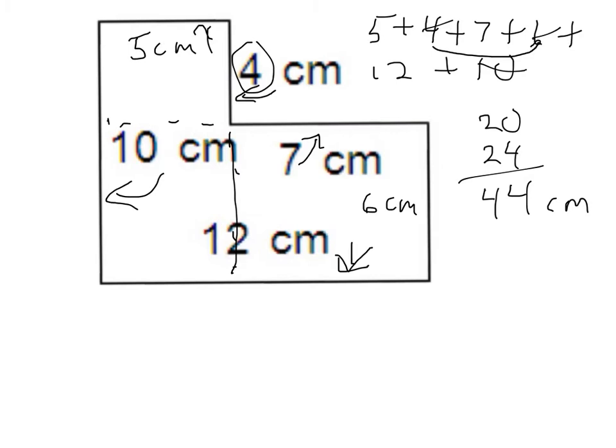Let me review what I just did. I found the length of each of the side lengths on my object — this side, this side, this side, this side, this side, and this side — and then I added them all up.